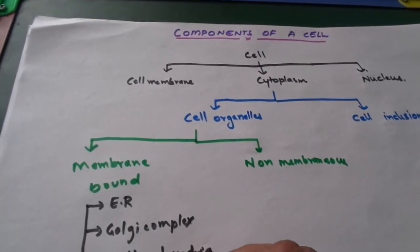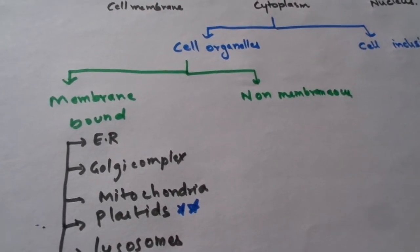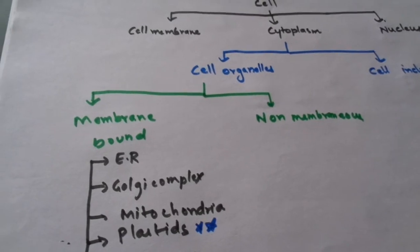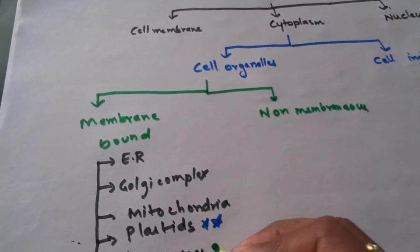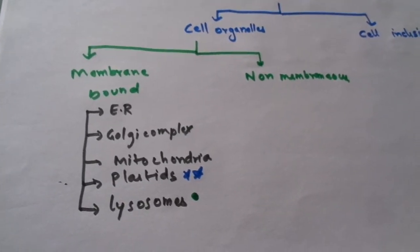I am marking here with double star the plastids, they are present only in plant cells, and lysosomes are present only in animal cells. These are the membrane bound organelles.